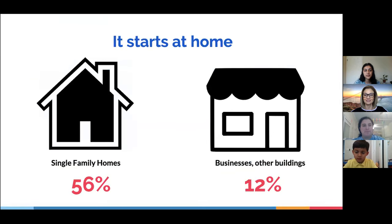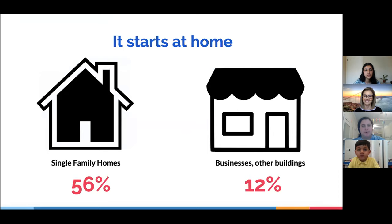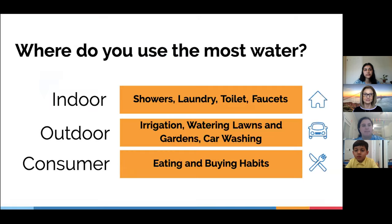Now that we know the importance of conserving water, let's talk about the tools we can use to look at a household's water usage and take action. In Pleasanton, single-family homes are responsible for 56% of the city's water usage, while commercial businesses only account for 12%. Pleasanton has a variety of resources to help facilitate water conservation on a day-to-day basis. The water footprint quiz we took at the beginning is an important resource for us to understand how much water we use, where the majority of it comes from, and to explore specific conservation options depending on our own water usage.